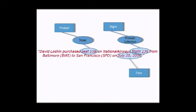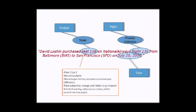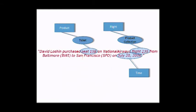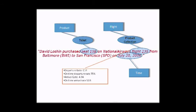The ticket itself has attributes that must be captured in the master representation: fare class, refundability, standby criteria, fare stability, and other conditions. The flight has some relatively static attributes as well — departure gate, arrival gate — plus some performance measures that are worthy of being master attributes also, such as on-time departures and on-time arrivals.